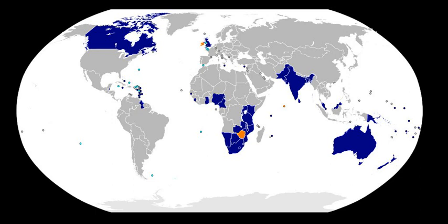Five others are monarchies with their own individual monarchs: Brunei, Eswatini, Lesotho, Malaysia, Tonga, and the rest are republics. Republic of Ireland, Zimbabwe, and Maldives are former members of the Commonwealth. South Africa, Pakistan and the Gambia left and later rejoined the Commonwealth.